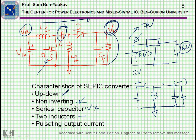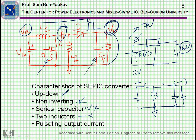Now, there are two inductors. This is not of course desirable — it's better to have one — but that's the way the circuit works. And finally, the output is pulsating; you get current pulses, which means the ripple will be higher, requiring a larger filter capacitor, which is not a very good feature — but again, that's the nature of the beast.